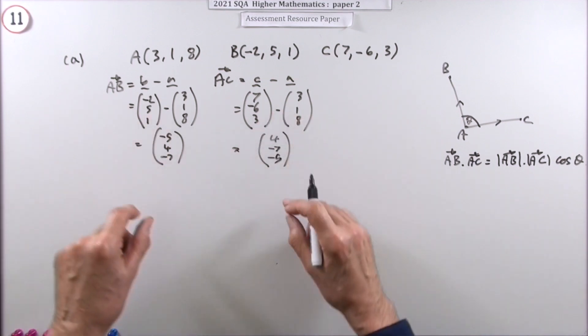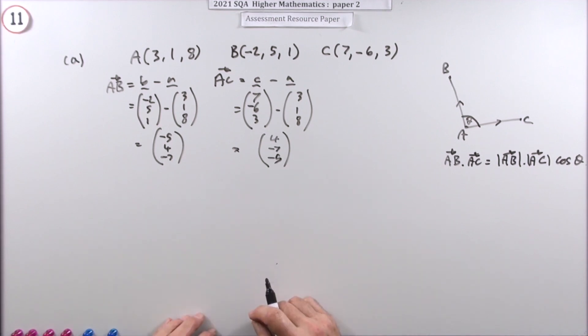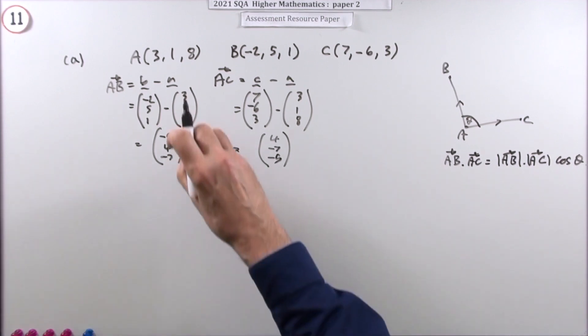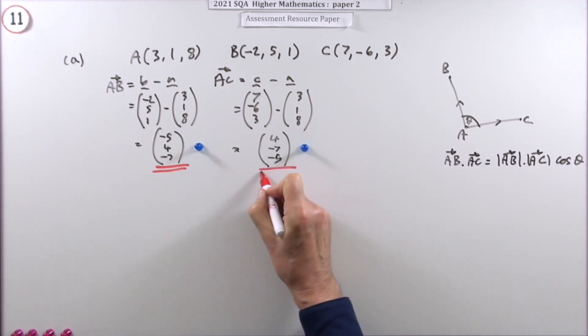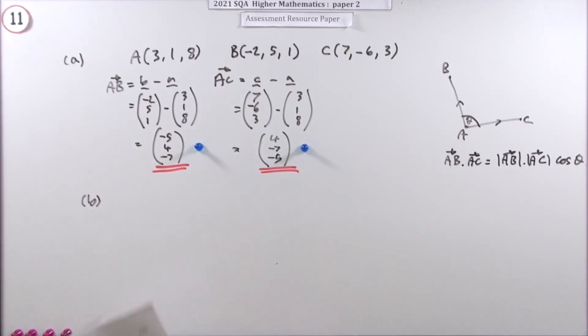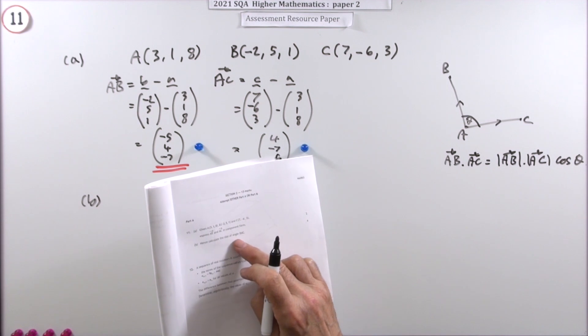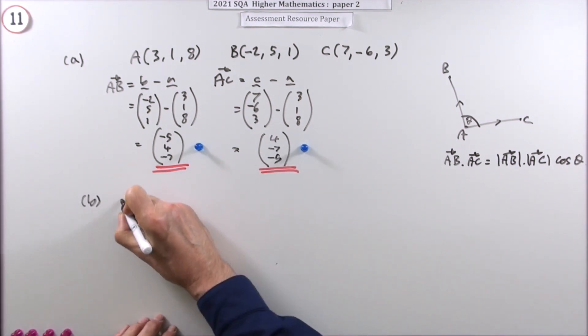Same numbers. If you've got the same numbers, it doesn't matter how they're jumbled up. That means the magnitudes are the same. But anyway, it's not asking about that. So find AB. Done it. Find AC. Done it. So when it says, hence calculate the size of angle BAC. I'm going to be using this. I'll just put it down.